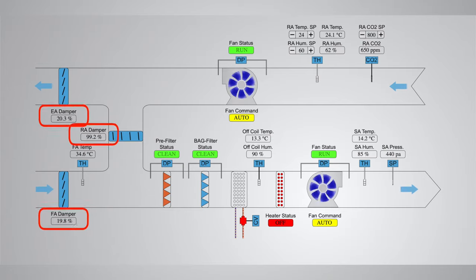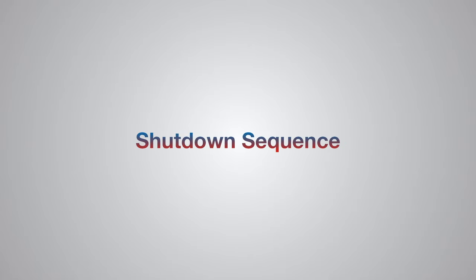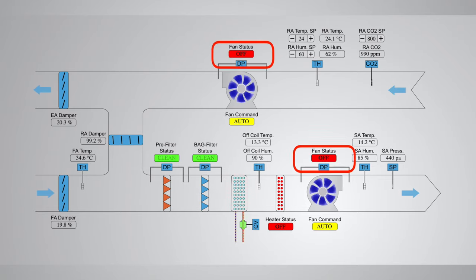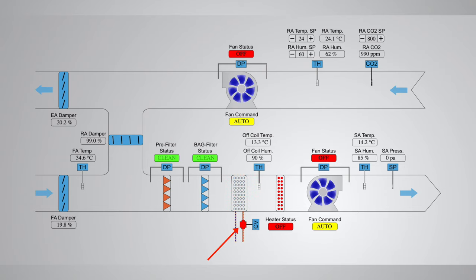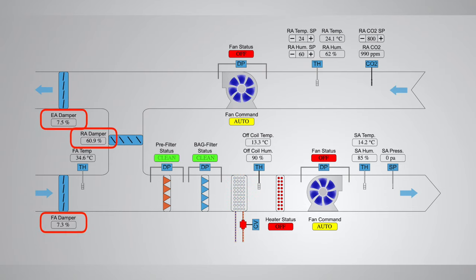The last BMS control is the shutdown sequence. In the shutdown sequence, the fans are switched off first, followed by closing the control valve fully, and then closing all the dampers. All control loops will be disabled until the startup sequence is initiated again.